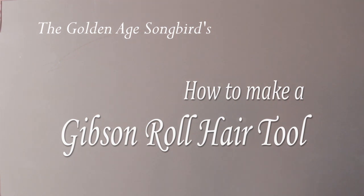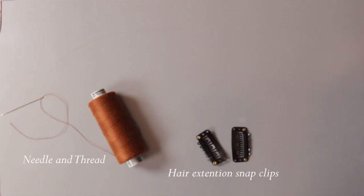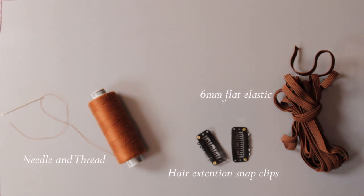Hello and welcome to my tutorial on how to make a Gibson roll hair tool. You will need a needle and thread, some hair extension snap clips, 6mm flat elastic and a foam bun.